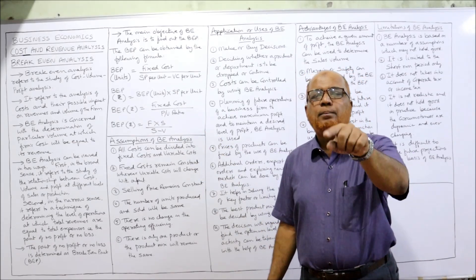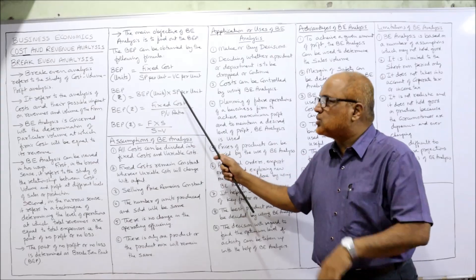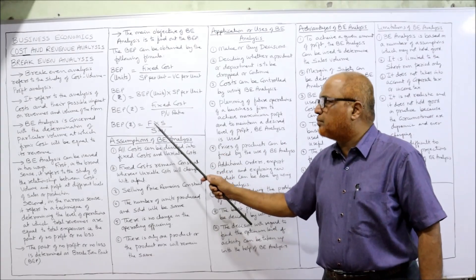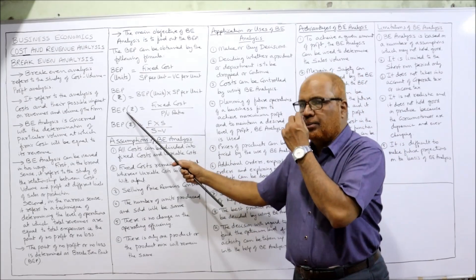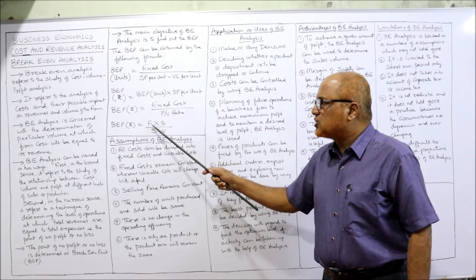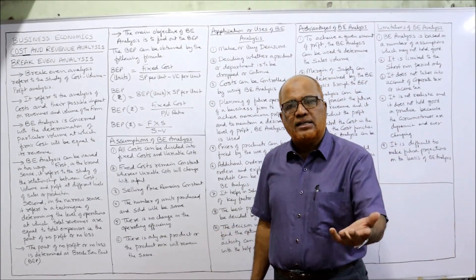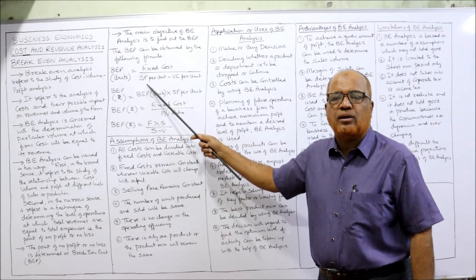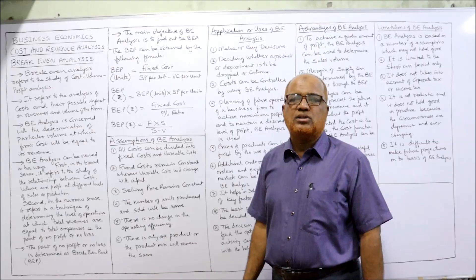If you want to find out BEP in rupees, multiply BEP in units by selling price per unit. One more formula: BEP in rupees equals fixed cost divided by PV ratio — the profit volume ratio. Another formula: BEP in rupees equals F multiplied by S, divided by S minus V, where V is variable cost. The units formula is: fixed cost divided by selling price per unit minus variable cost per unit. Any formula you apply will give the same answer.